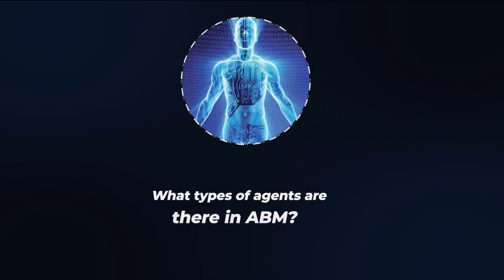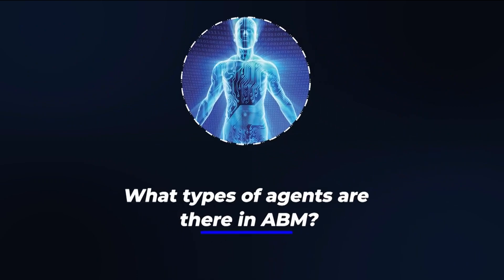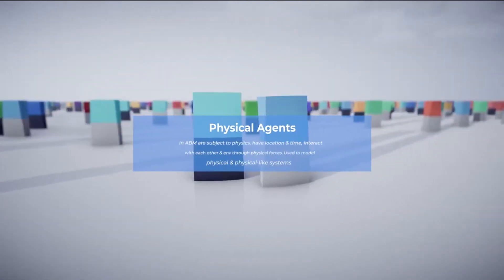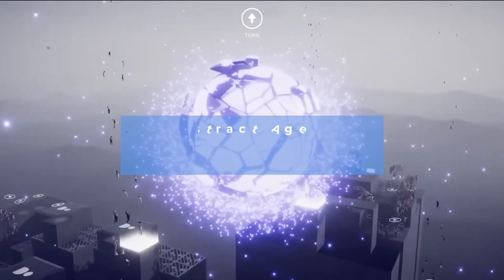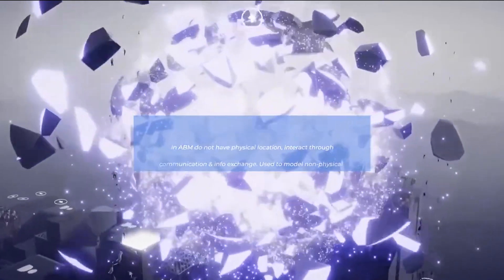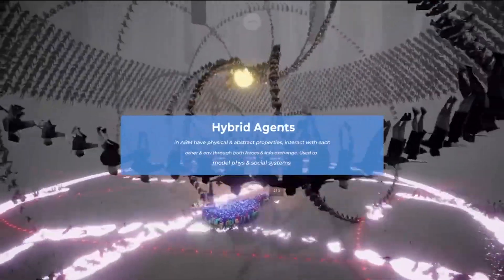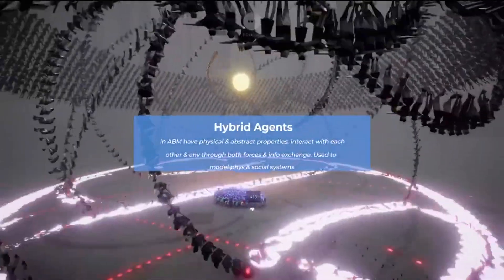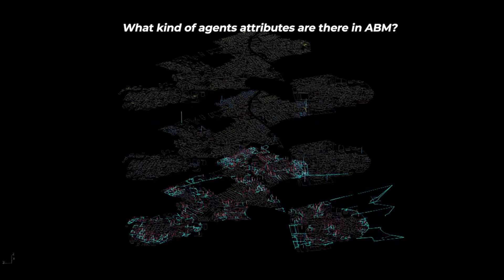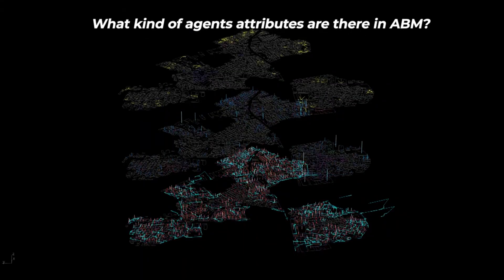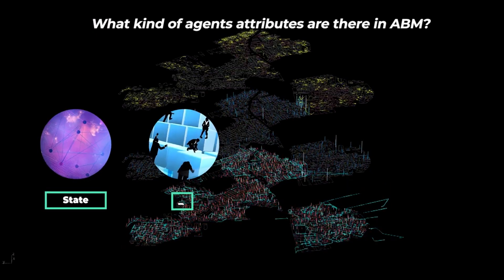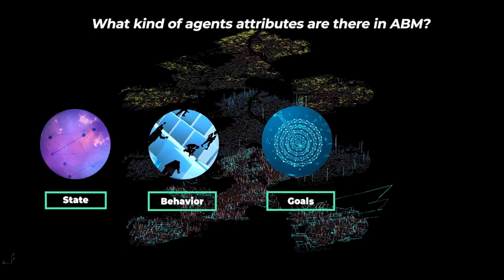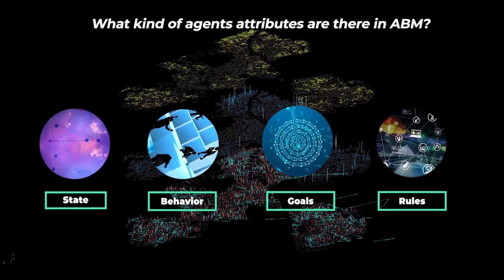What types of agents are there in ABM? Physical agents, abstract agents, hybrid agents. What kinds of agent attributes are there in ABM? State, behavior, goals, rules.